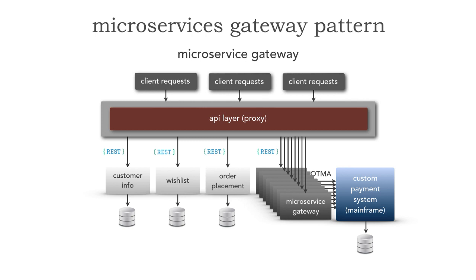Now I've got a placeholder there so that the gateway in time becomes a functional service. The other form is one single solitary service that fronts that custom system — not many. So if order placement needed to charge a card, instead of going directly to the custom payment system on the mainframe, order placement does an inter-service call to the microservices gateway, which has all the logic to do a payment, which then in turn goes to the mainframe system. Similarly, the customer information system goes to a microservices gateway to get a gift card balance. Now I can do inter-service communication within my microservices ecosystem all through REST, and I have one and only one microservice that knows about that mainframe system.